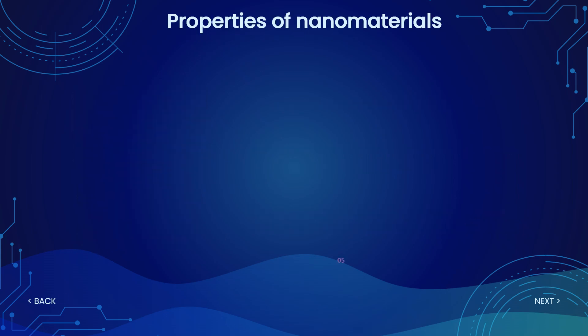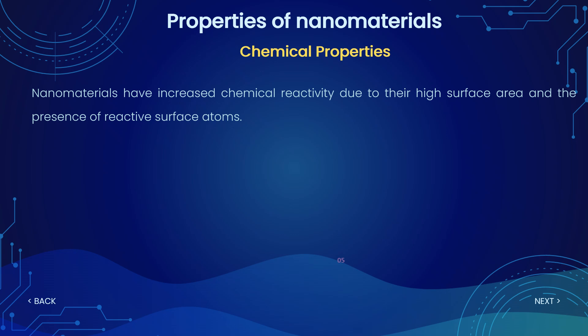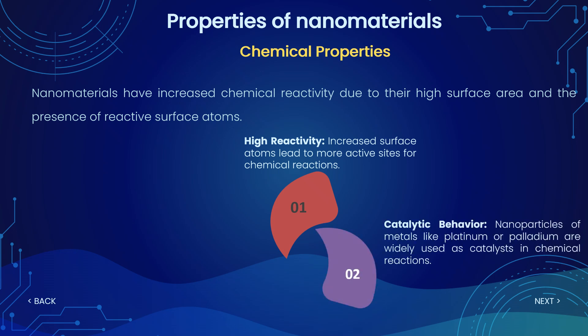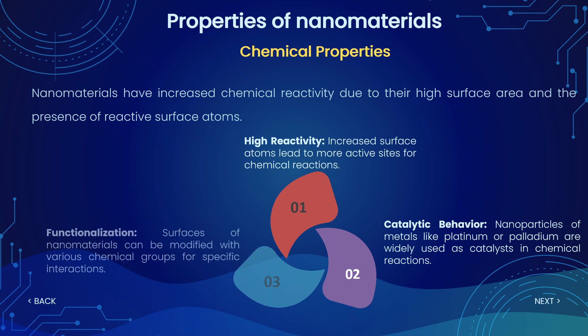Let's talk about the properties of nanomaterials, starting with chemical properties. Nanomaterials have high chemical reactivity compared to their bulk counterparts, because they have a high surface area to volume ratio at the nanoscale. Metal nanoparticles like platinum or palladium show high catalytic behavior. Also, nanomaterial surfaces can be modified with various chemical groups for more specific interactions — this is called functionalization.